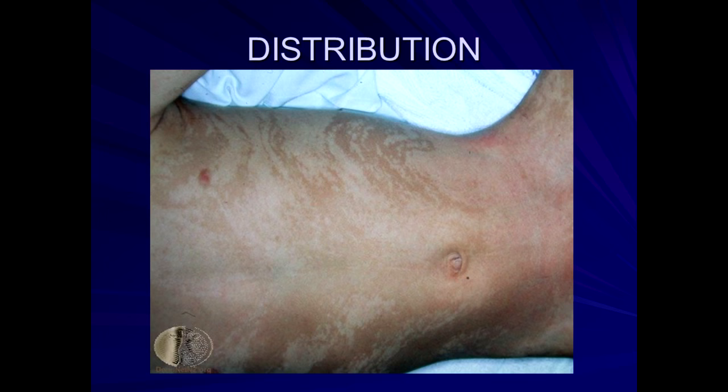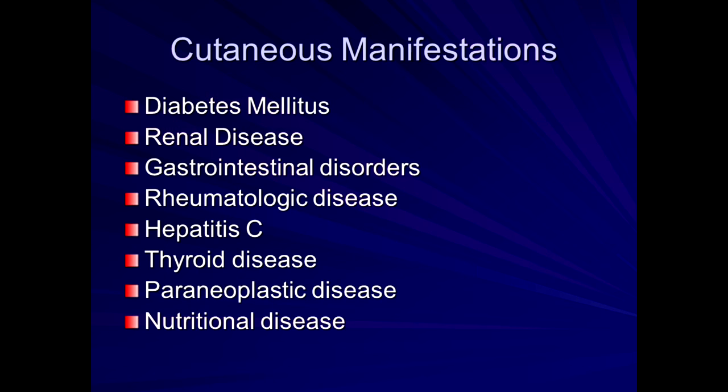I've shown you a lot of terms to give us groundwork to dive into the cutaneous manifestations of systemic diseases. It would be impossible in one lecture to cover all of this, but we'll review key conditions. We'll cover diabetes-related skin disease, renal patients with skin findings, gastrointestinal disorders, rheumatologic disease, connective tissue disease, hepatitis C, thyroid disease, and those skin conditions that may indicate an underlying unidentified occult malignancy, as well as nutritional disease.